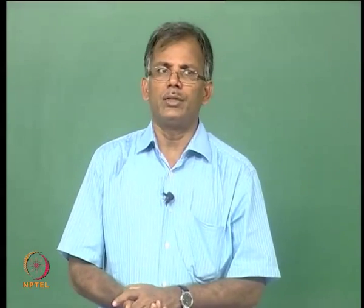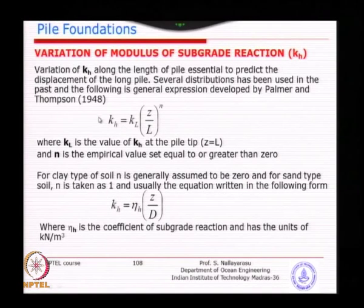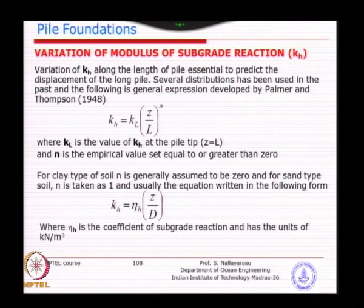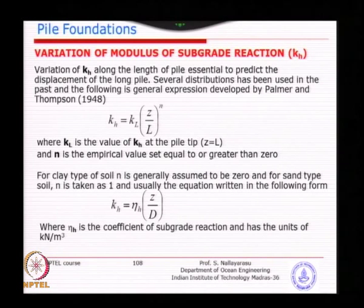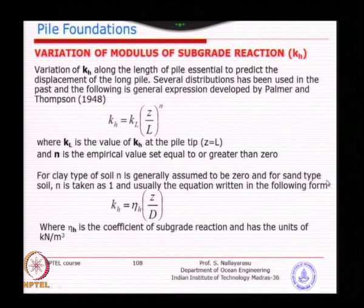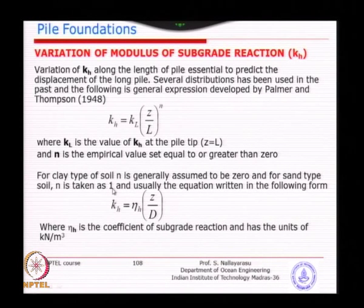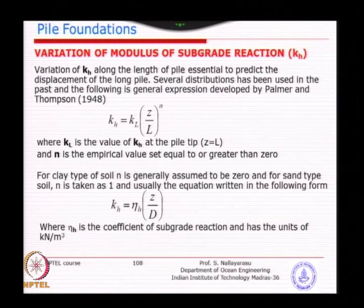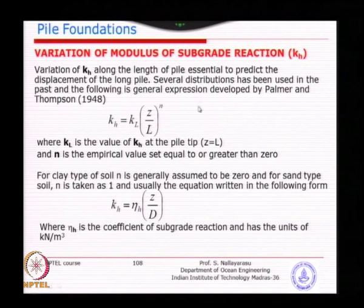Originally proposed by Thomson as early as the 1940s, the KH value is taken in a non-linear fashion. Linear means n to the power 1. For clay type of soil, n is generally assumed to be 0 - that means constant value. For sand type of material, n is taken as 1, giving linear distribution with respect to Z (depth below seabed) and L (pile embedment length).